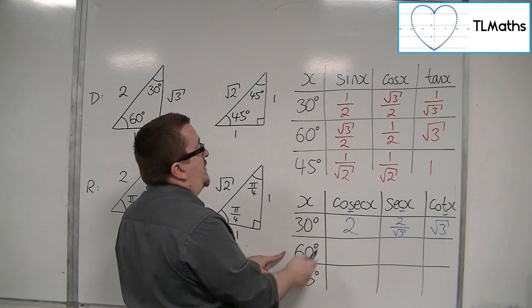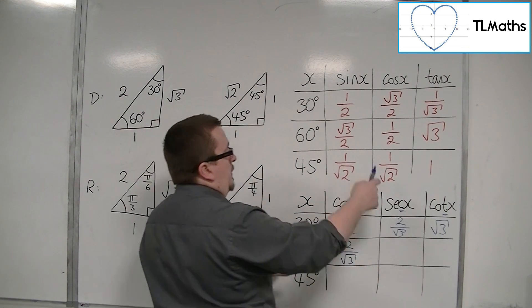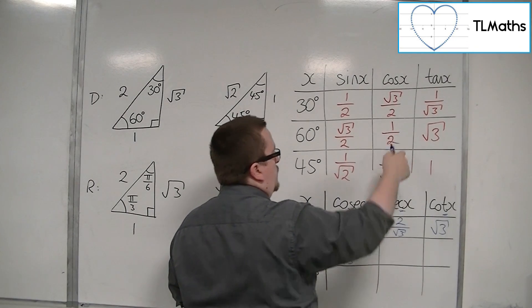Cosec of 60 will be 2 over root 3. Sec of 60 will be 2.